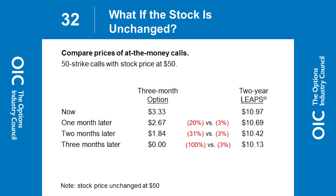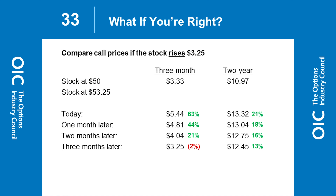Comparing those same option contracts with the stock going up over $3.25 – from $50 to $53.25. You can see the percentage return in both the three-month option and the two-year option if that happened overnight, or over one month, two months, and three months. We paid $3.33 – if it took three months for the stock to get there, we'd actually be down a little on the price. If the stock at expiration only got to $53.25, we'd be down a small percentage. On the LEAP side, we'd be up handsomely – double digits – and still with almost a couple years to go.